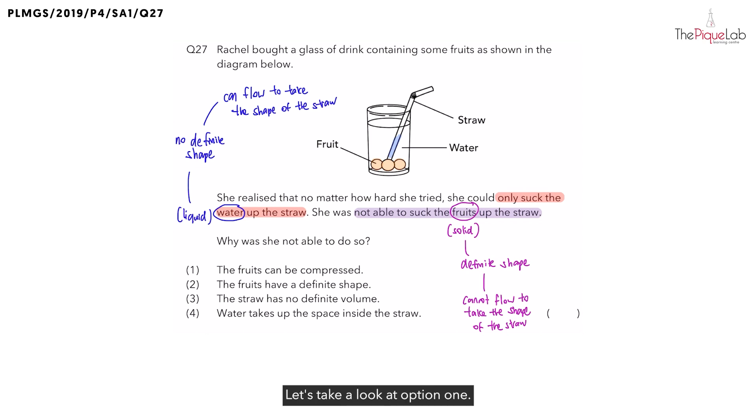Let's take a look at option one. They say that the fruits, which is a solid, it can be compressed. Is that true? No. Remember, in order for something to be compressed, it must not have a definite volume. But what about solids? Do solids have a definite volume? Yes. And since they have a definite volume, can solids be compressed? No. So, this statement is definitely out.